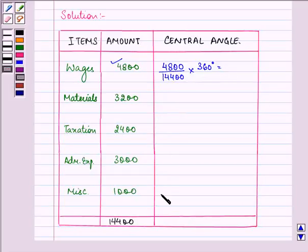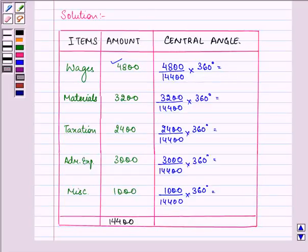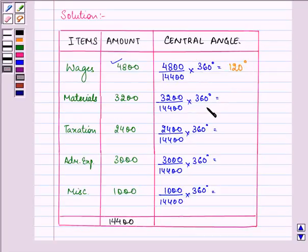Now in each case we will do that. On solving each one, we get the answers, and their sum should be equal to 360 degrees at the end.